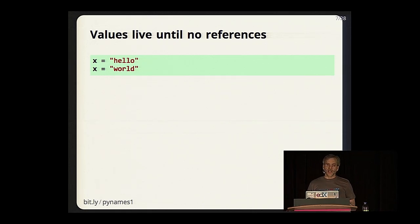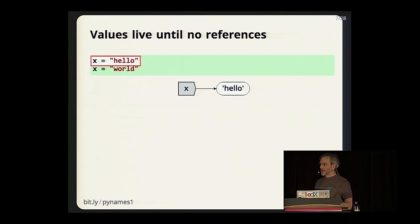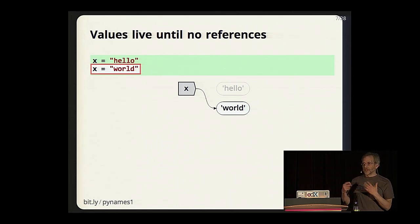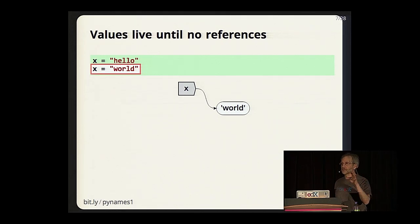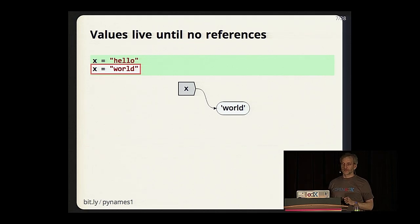In Python, memory is managed dynamically, which means values exist until there are no more references to them. If x is referring to the string 'hello', when we make x refer to the string 'world', the 'hello' value now has no names referring to it and so it will be reclaimed and removed from the process. The important thing is that as long as names are still referring to values, the values are still there; once all the names are gone, the value is completely inaccessible.